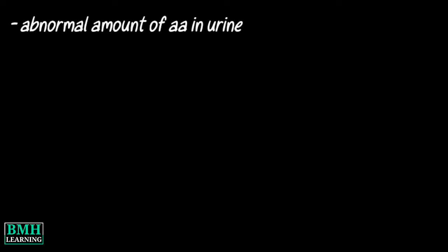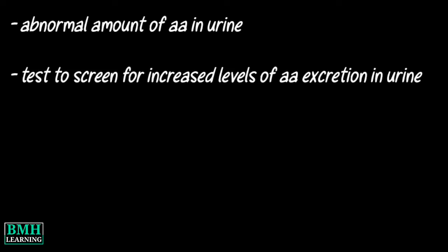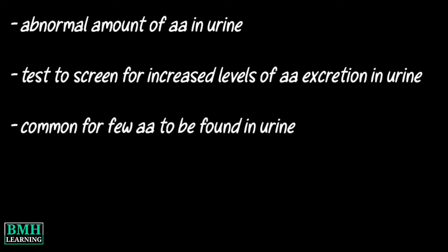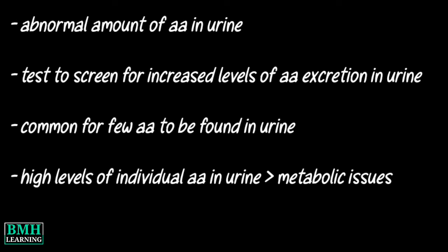Aminoaciduria is an abnormal amount of amino acids in the urine. It is a test that screens for increased levels of amino acid excretion in the urine. It is common for a few of these amino acids to be found in the urine; however, high levels of individual amino acids in the urine indicate issues with metabolism.